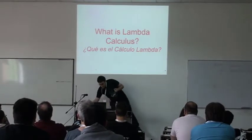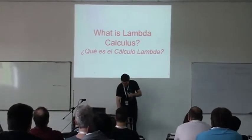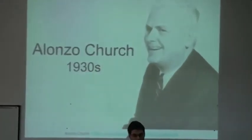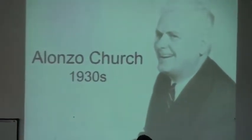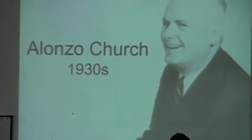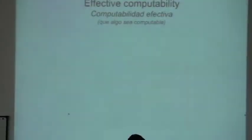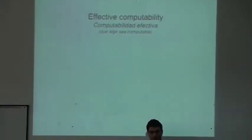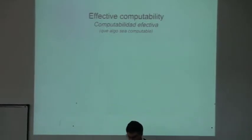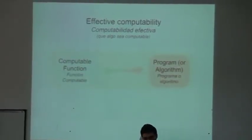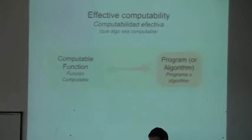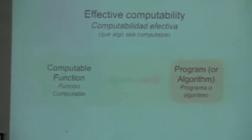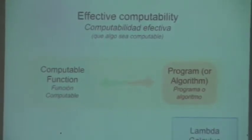What is Lambda Calculus? Lambda Calculus was introduced by Alonzo Church in the 1930s as a way of formalizing the concept of effective computability. A function is effectively computable if there exists an algorithm that can do the job of that function. Church showed that any computable function — that is, any algorithm or program — can be expressed in terms of Lambda Calculus.